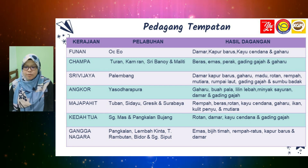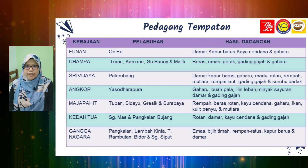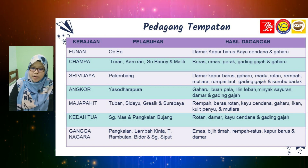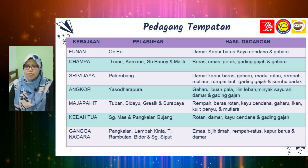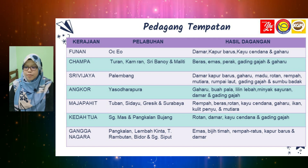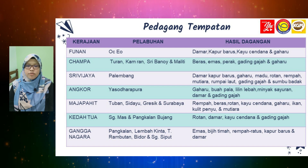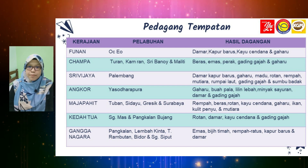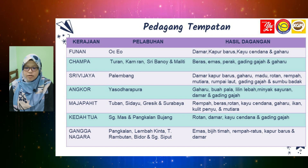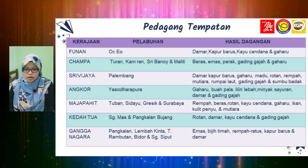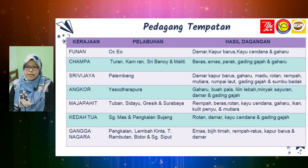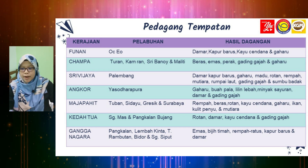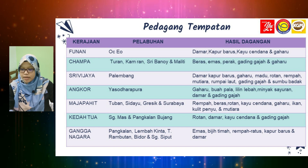Kerajaan Sriwijaya — pelabuhan di Palembang, hasil dagangan adalah damar, kapur barus, gaharu, madu, rotan, rempah mutiara, rumpai laut, gading gajah dan sumbu badak. Kerajaan Angkor — pelabuhan di Yasodharapura, hasil dagangan adalah gaharu, buah pala, lilin lebah, minyak, sayuran, damar dan gading gajah.